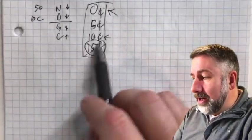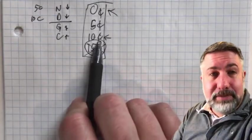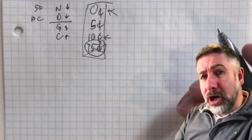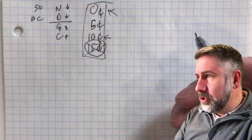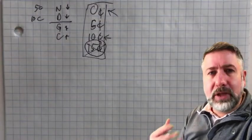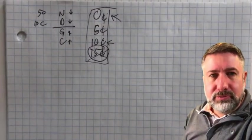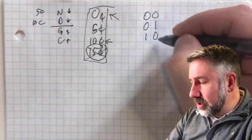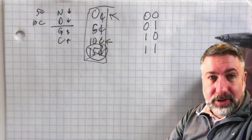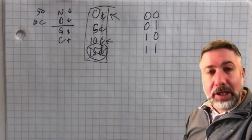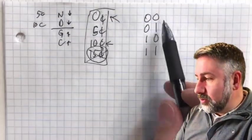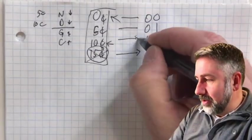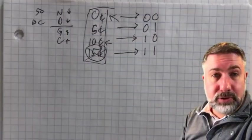Now we think about how to represent those states in binary. The fairly obvious solution is to represent the number of nickels deposited: zero nickels, one nickel, two nickels, three nickels — a literal count. This corresponds to 0, 5 cents, 10 cents, and 15 cents respectively, and that will suit us well as we do our design.